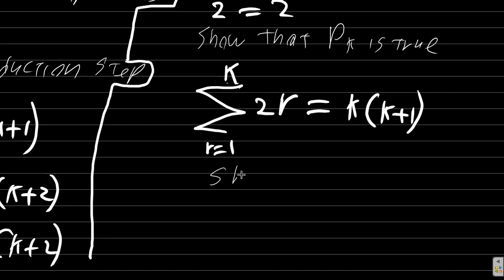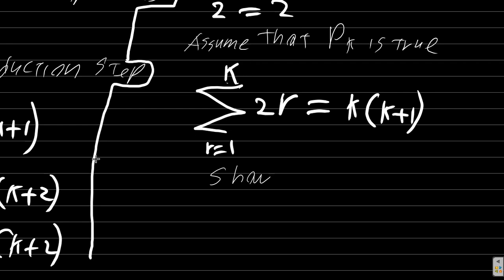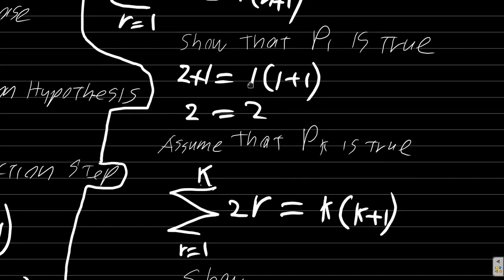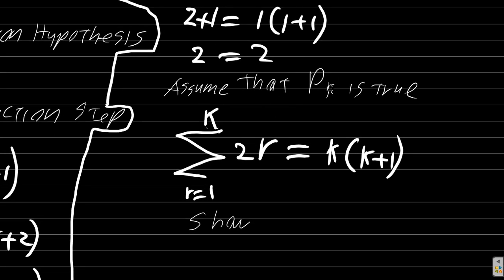By the way, the induction hypothesis is not something you're proving — you assume it. So you should write 'assume.' You're not proving anything; you just assume that it is true. Notice for n equals 1 it is true — no argument about that, you showed p1 is true. But pk, you don't know what k is, so you assume that pk is true.